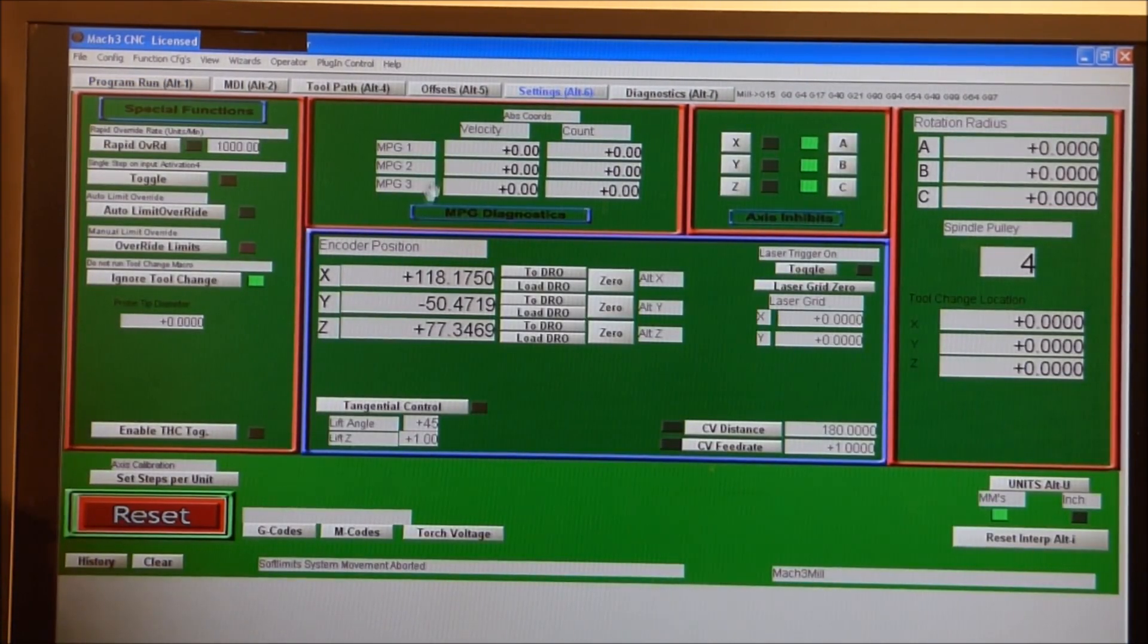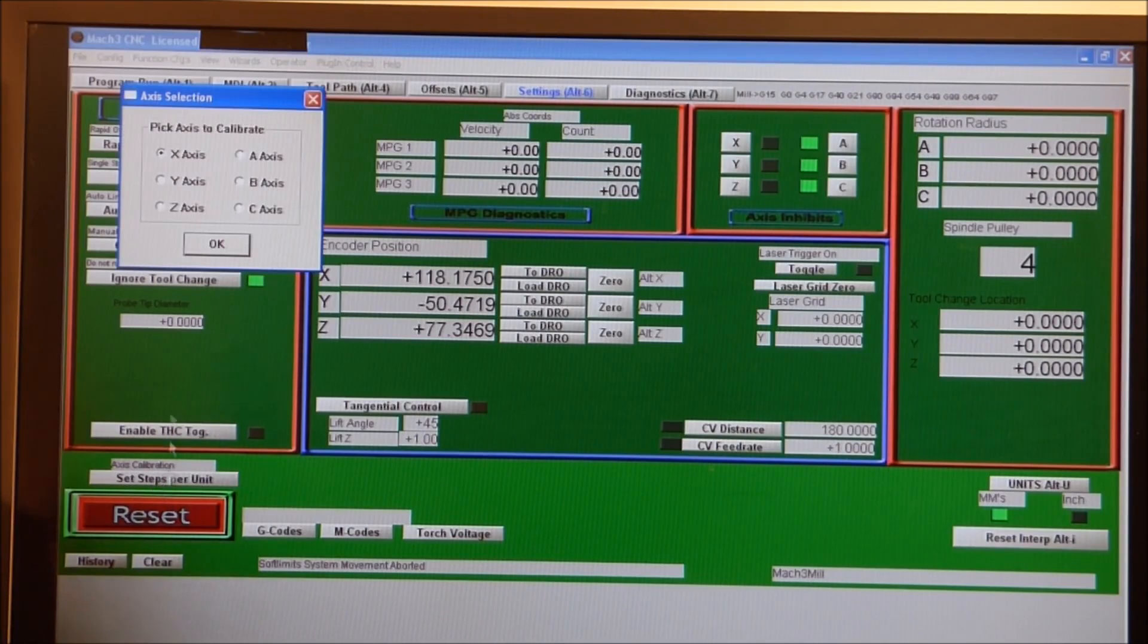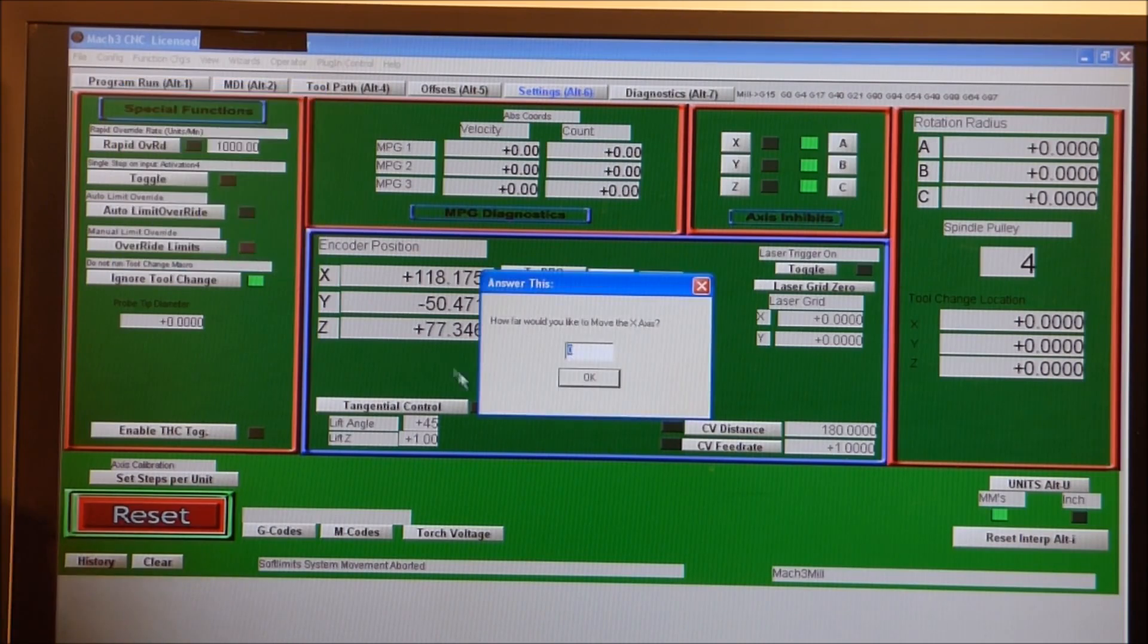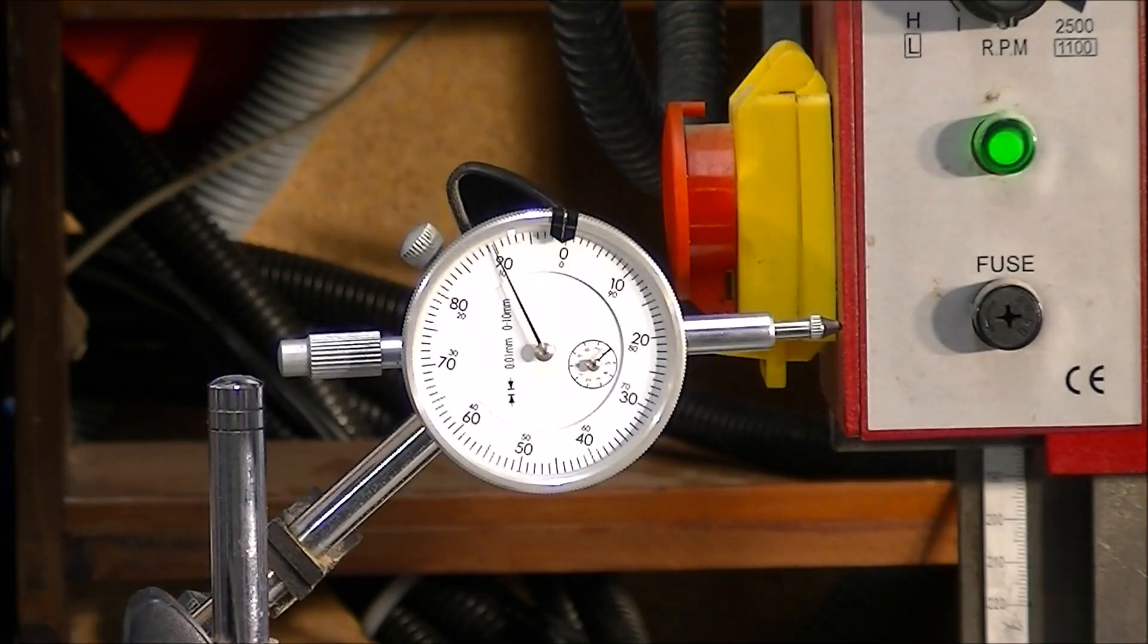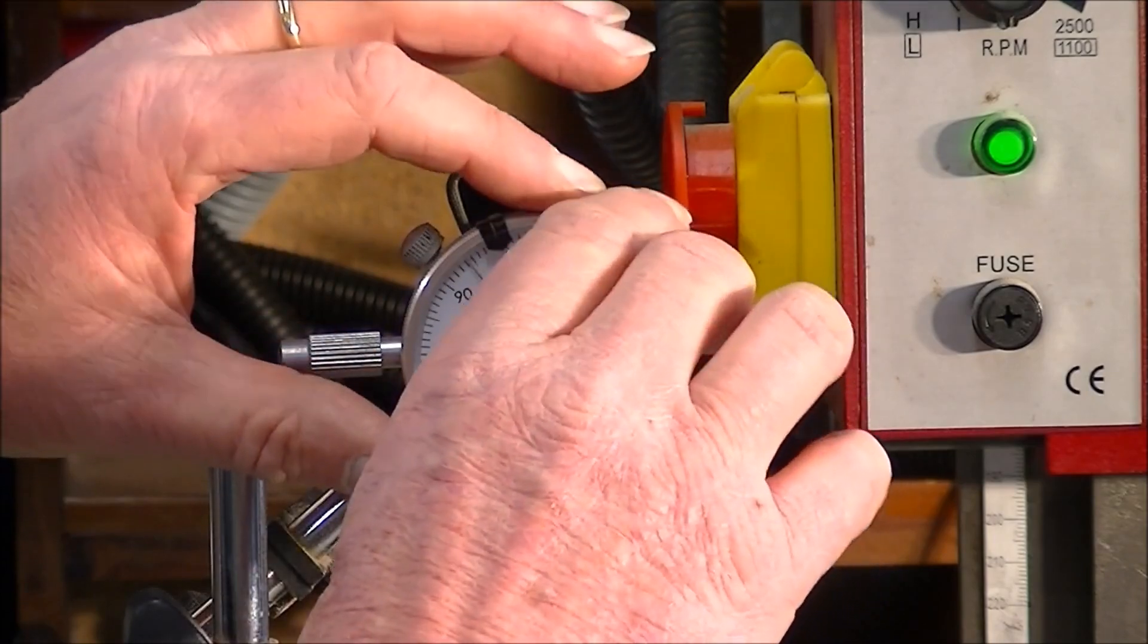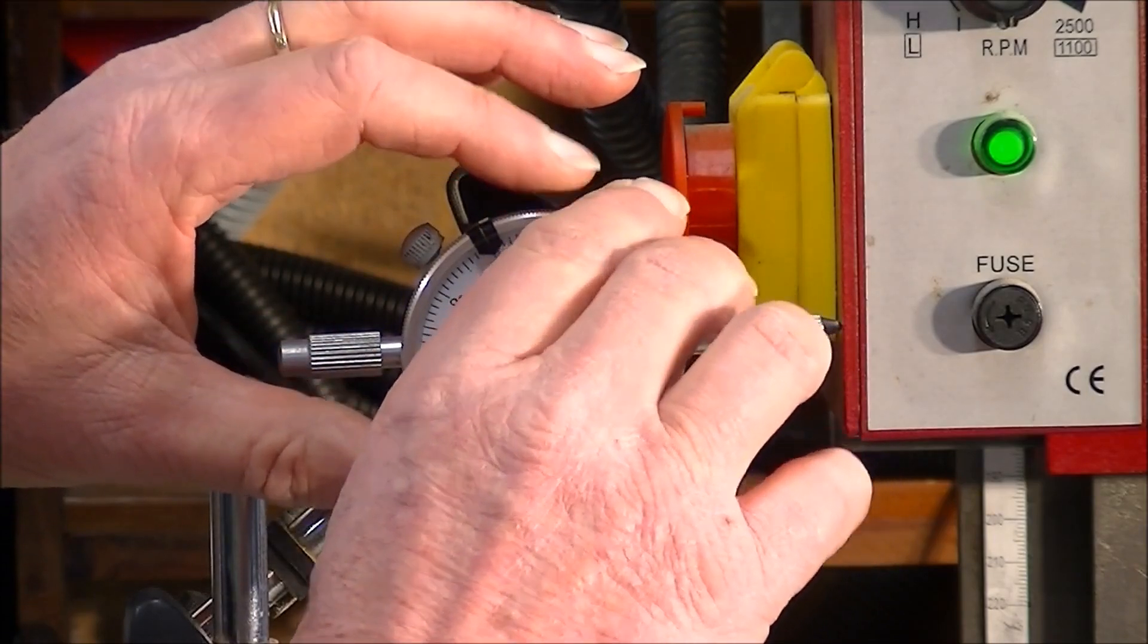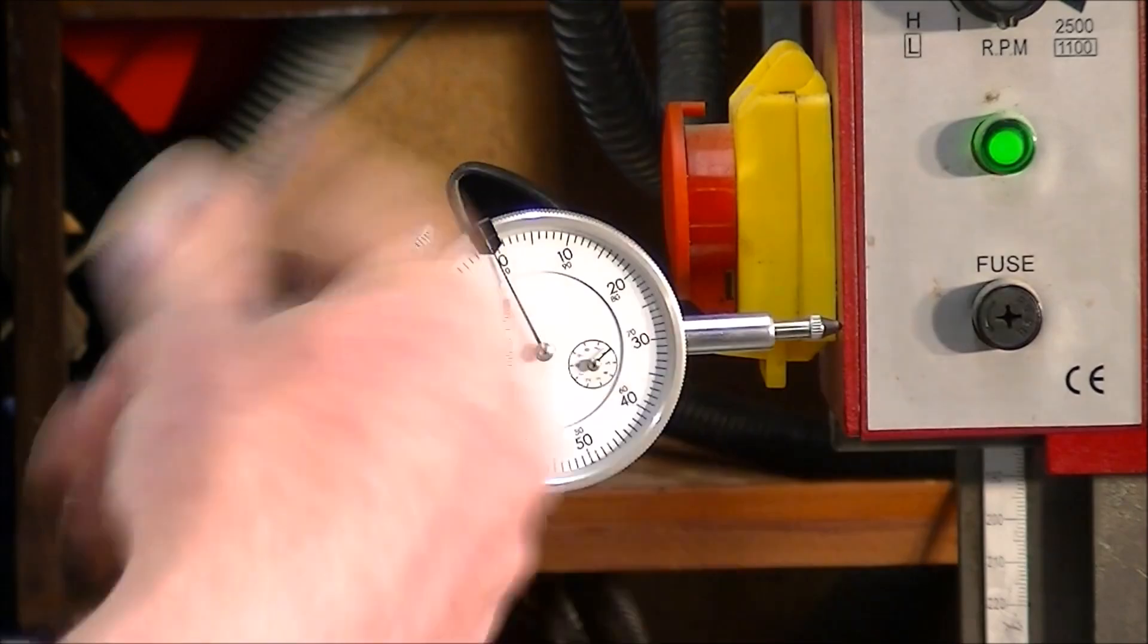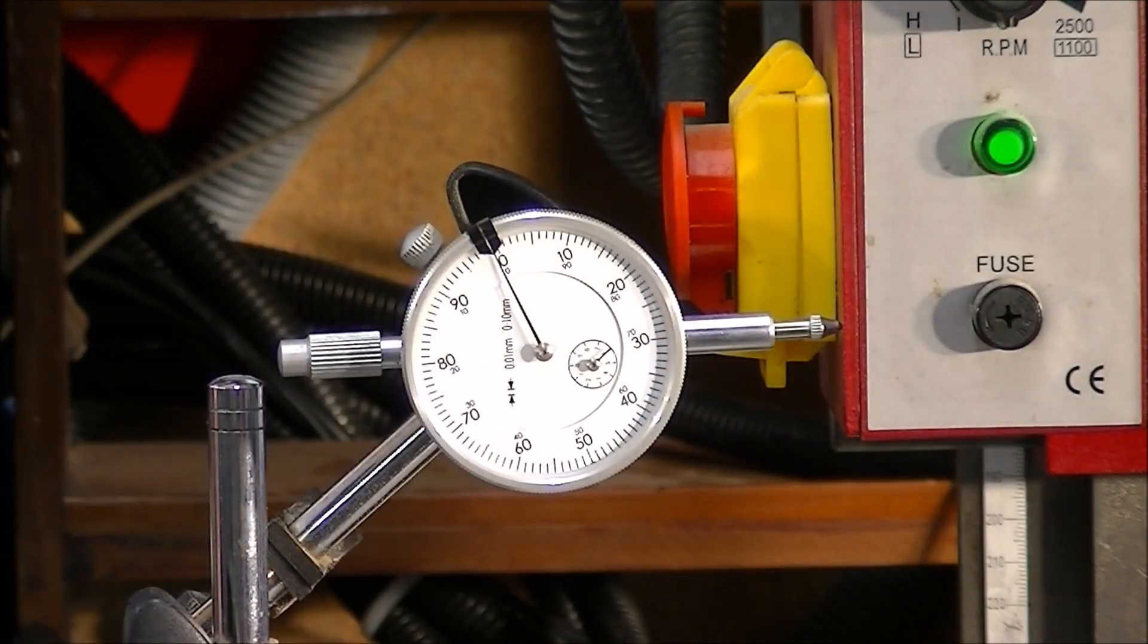We go into settings and come down to here and open up steps per. We're going to check the x-axis, press OK. I'm going to put one millimeter in here.